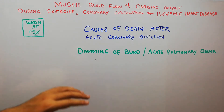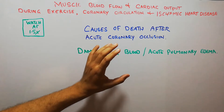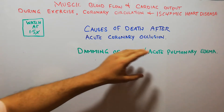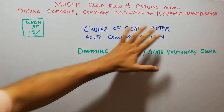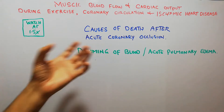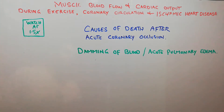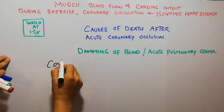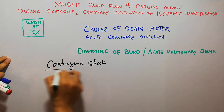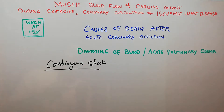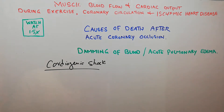Today in this lecture we are going to discuss in detail the damming of blood in the venous system of the human body and acute pulmonary edema. We are basically discussing causes of death after acute coronary occlusion, and today we are going to discuss acute pulmonary edema due to damming of blood in the venous system of the human body.